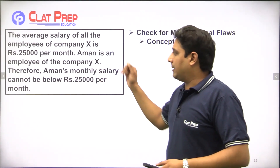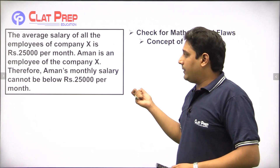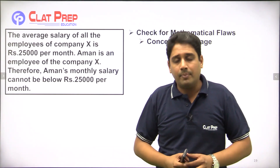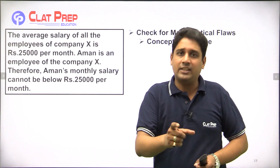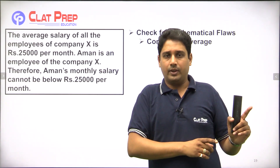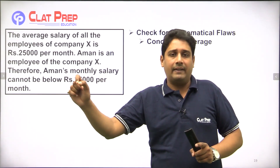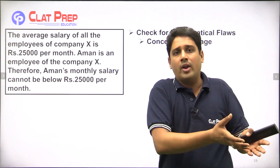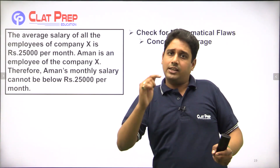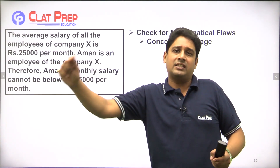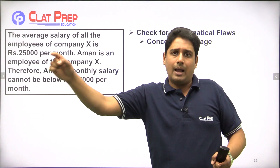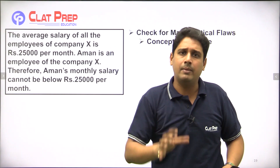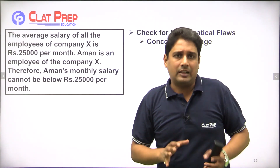The argument then says: Aman is an employee of Company X, therefore Aman's monthly salary cannot be below 25,000 per month. Now think about that — the average salary of Company X is 25,000, and Aman is an employee of that company, so just because he works there and the average salary is 25,000, can I say that Aman's monthly salary will be a minimum of 25,000?